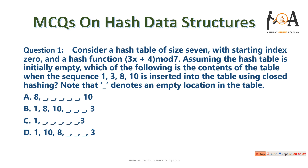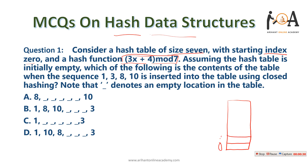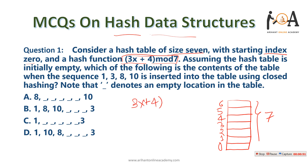Welcome to Arihant Online Academy. In this session we are going to discuss very important MCQs on hash data structures. Let's start with question number one: consider a hash table of size 7 with starting index 0 and a hash function (3x + 4) mod 7. This gives us a hash table of size 7 with indices 0, 1, 2, 3, 4, 5, and 6.